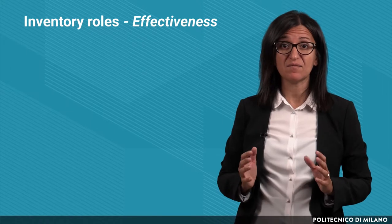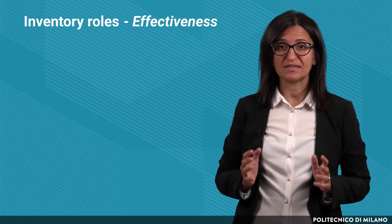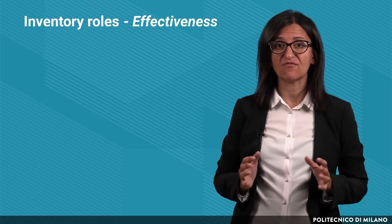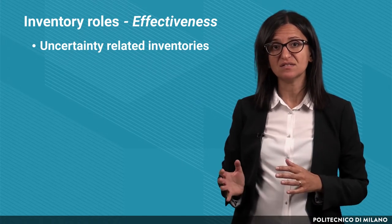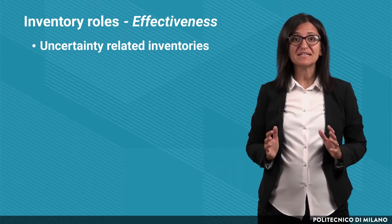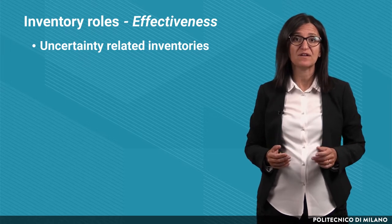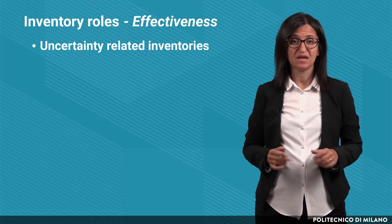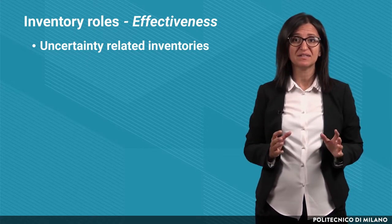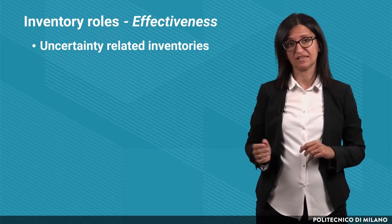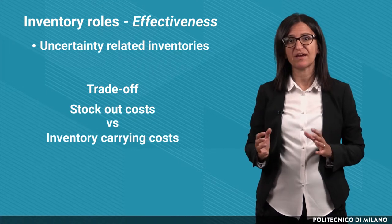We have said at the very beginning of the lecture that inventories can also serve effectiveness. For example, this is the case of inventories related to uncertainty, which are intended to face variation in demand and in supply. The basic idea is to keep stocks in order to reduce the probability of incurring stock-outs if unexpected events happen — for example, if customer demand is higher than expected or the replenishment lead time is longer than expected. Therefore, the trade-off is between the costs of stock-outs and the inventory carrying costs.